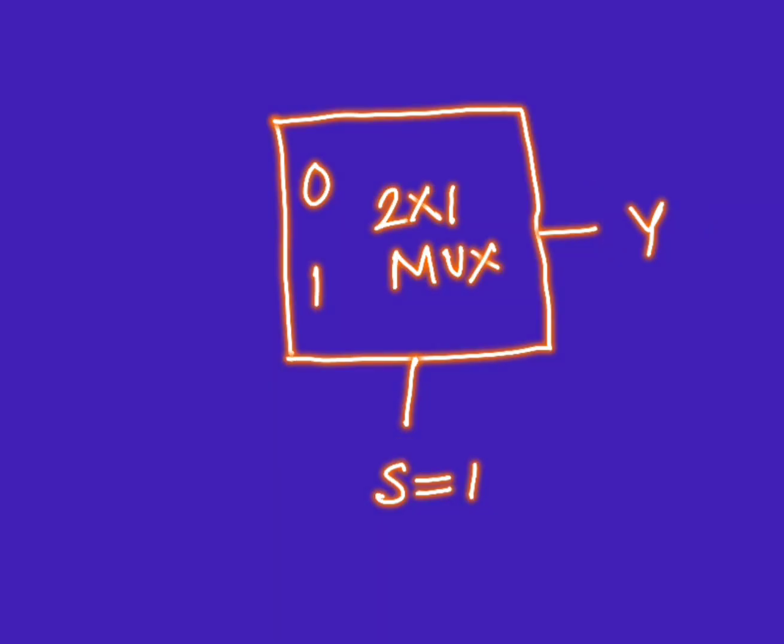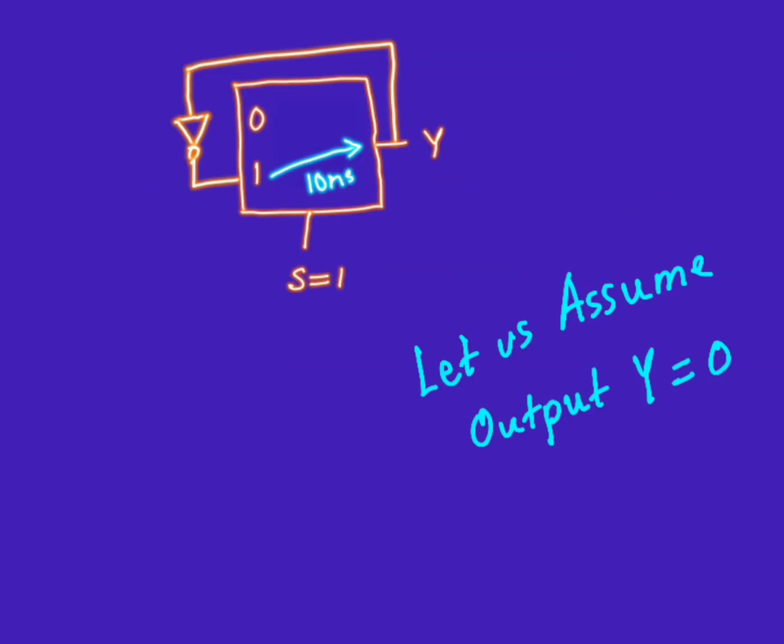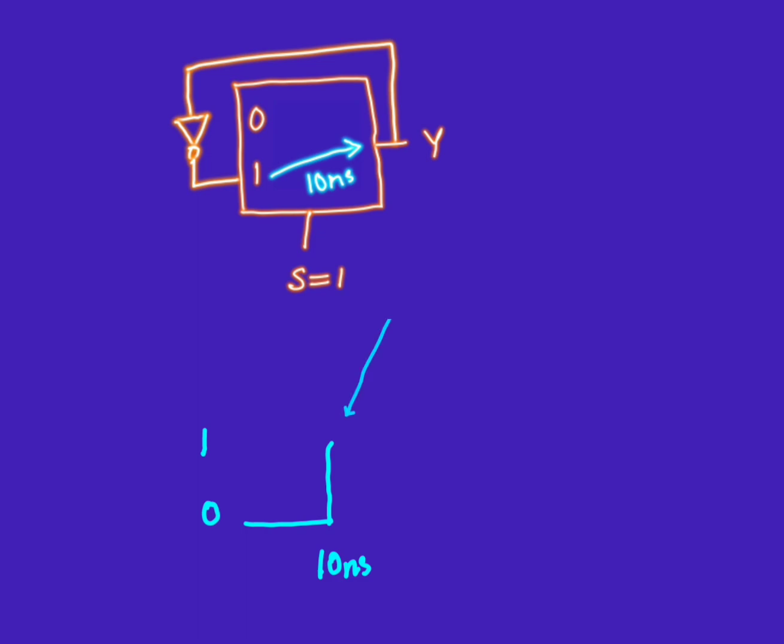As per the question, S is already set to 1 and will select pin 1. It has been said that there is a 10 nanosecond delay in the 2-to-1 MUX. If we assume that the output Y is 0 initially, then it will toggle because of the inverter, but it will take 10 nanoseconds to become 1. Then again, as Y is 1, it will take another 10 nanoseconds to become 0 again. After 10 nanoseconds, the output Y will toggle its value.